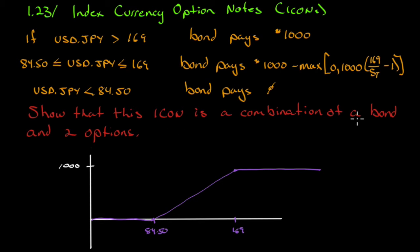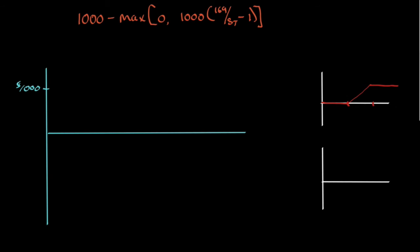We need to select a bond and two options that produce the same payoff. Here's the issue you should note right away: we have a thousand-dollar bond, so our payoff is $1,000 minus whatever happens in here. If the yen is at 169, we get 169/169 = 1, so 1 minus 1 is 0, giving us $1,000 minus $0 = $1,000. That checks out.